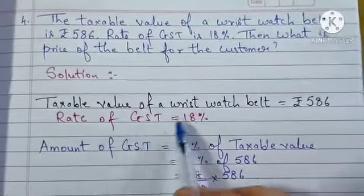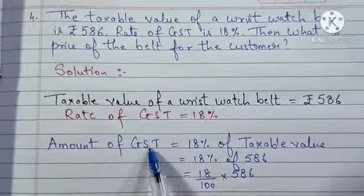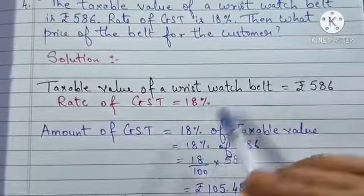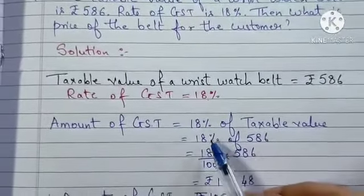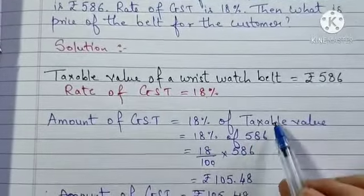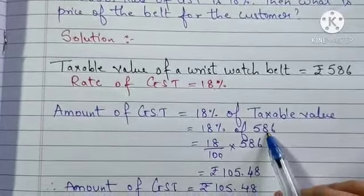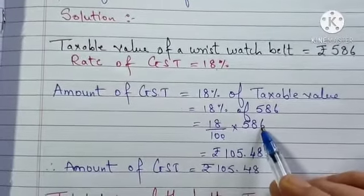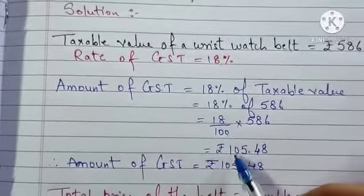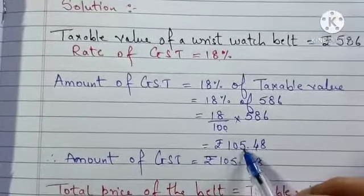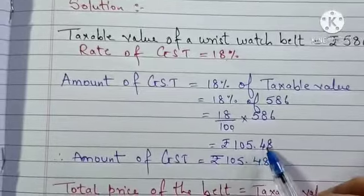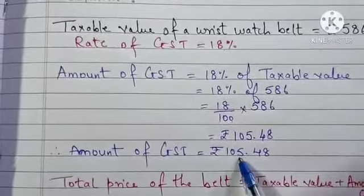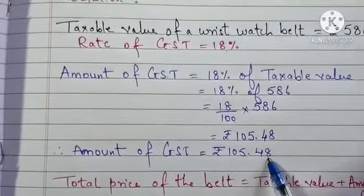To find out the amount of GST, amount of GST is 18%, 18% of taxable value. Taxable value is 586. So 18% is written as 18 upon 100 into 586. After calculation, you will get Rs. 105.48. Amount of GST is equal to Rs. 105.48.